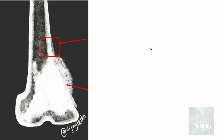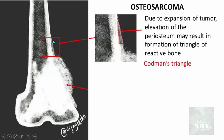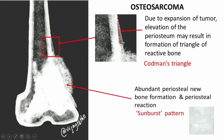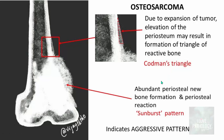The Codman triangle is caused by expansion of the tumor resulting in elevation of the periosteum, forming a small triangle-like area. The sunburst pattern is due to abundant periosteal new bone formation and periosteal reaction. Both Codman triangle and sunburst pattern are radiological features of osteosarcoma indicating an aggressive pattern of these tumors.